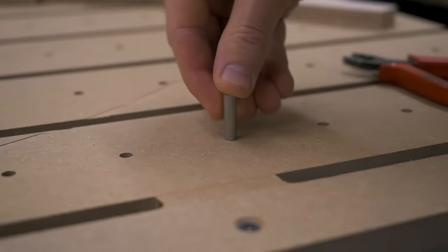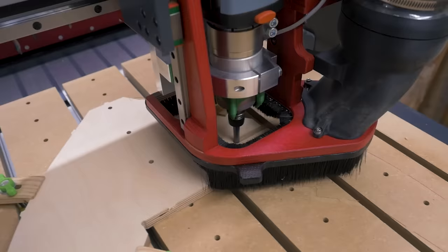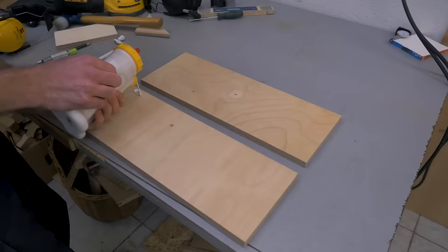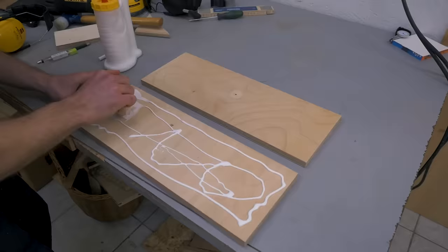One part needs machining on both sides, and therefore I used a hole grid in my new spoilboard that I made in another video. For some parts that are a bit thicker, I glued two scrap pieces of plywood together.